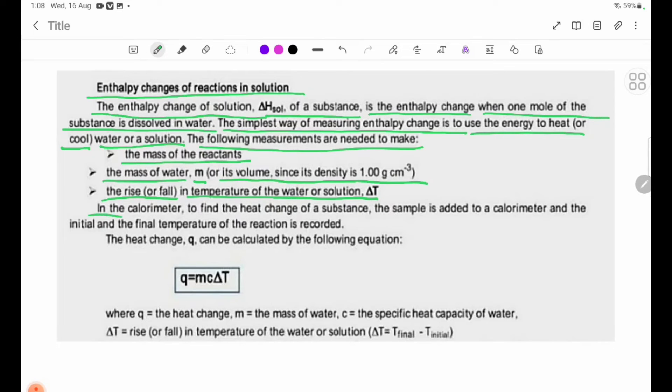In the calorimeter, to find the heat change of a substance, the sample is added to a calorimeter, and the initial and final temperature of the reaction is recorded.